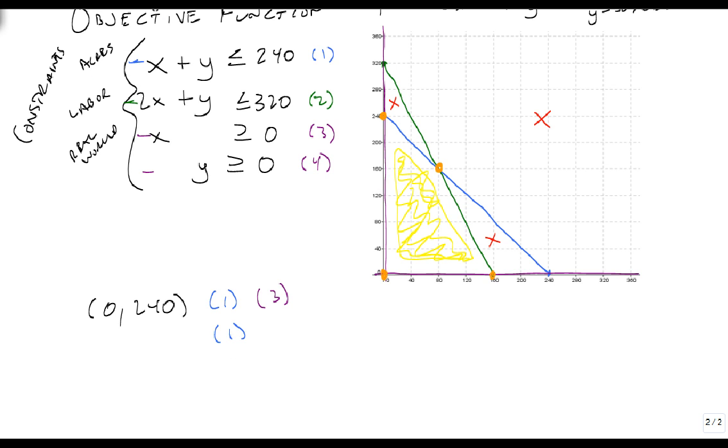So if I solved 1 and 2, if I couldn't see it, if it didn't come out on a nice integer, I could solve for it, and it's going to be at 80, 160. Notice that 80 plus 160 adds up to 240, and 2 times 80 is 160, and 160 plus 160 is 320. So that point does work for 1 and 2.